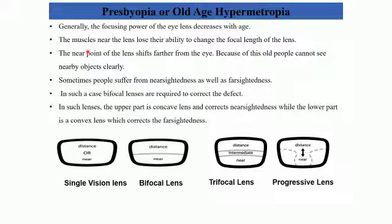The near point for a person with a normal eye is 25 centimeters — meaning an object must be at a minimum distance of 25 centimeters to be seen clearly. But in the case of people suffering from presbyopia, this near point shifts from 25 centimeters to 200 centimeters, meaning the object must be at a minimum distance of 200 centimeters to be seen clearly.